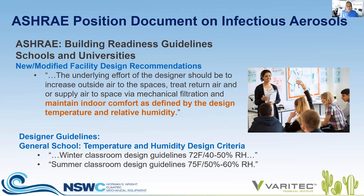The ASHRAE Epidemic Task Force website building readiness guidelines state, regarding schools and universities, that the underlying effort of designers should be to increase outside air to the spaces, treat return air via mechanical filtration, and maintain indoor comfort as defined by design temperature and relative humidity. Under general school guidelines, temperature and humidity in winter should be set at 72 degrees dry bulb and a humidity range of 40 to 50%. In summer classroom design, room set points should be in the range of about 75 degrees Fahrenheit and 50 to 60% RH.